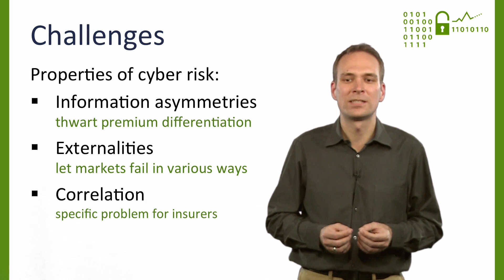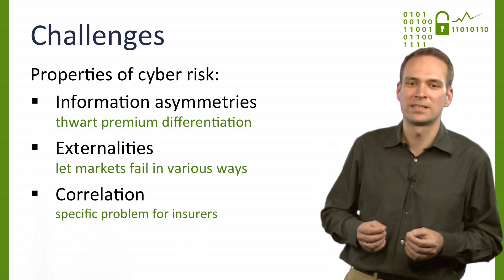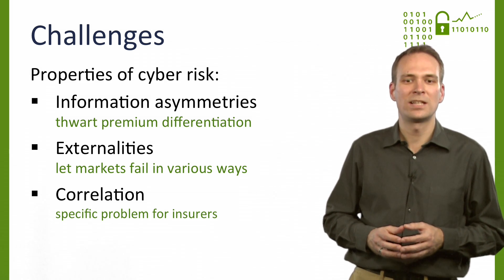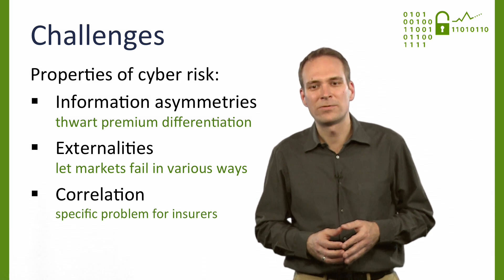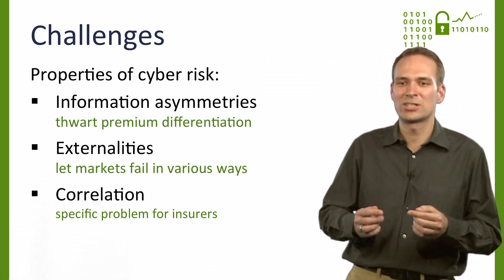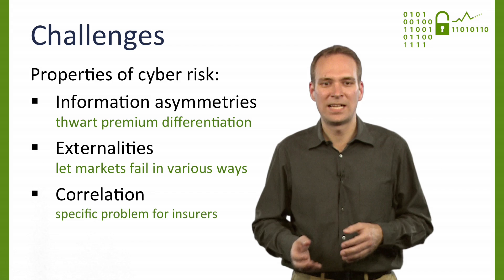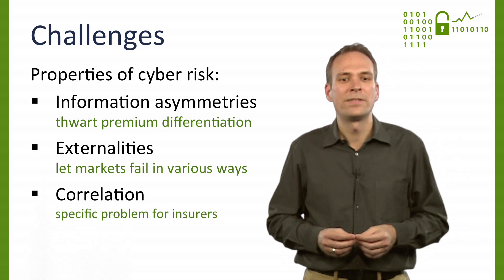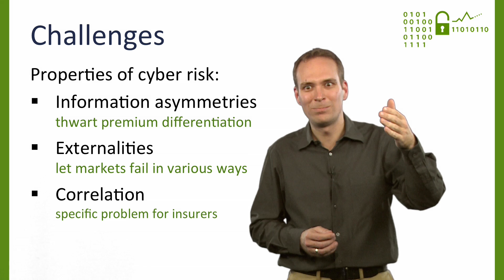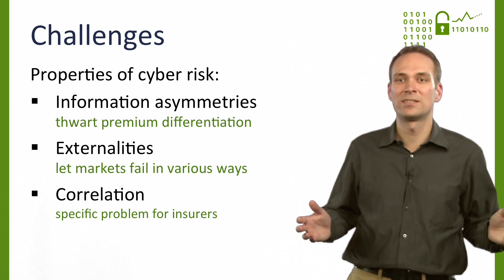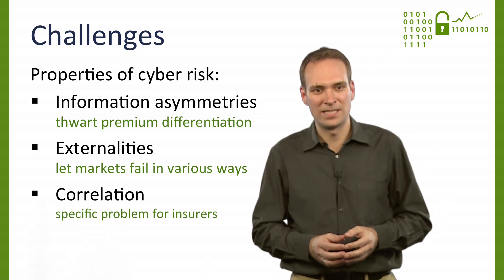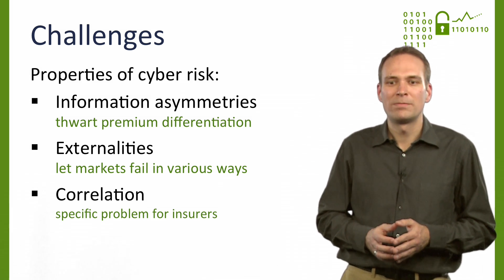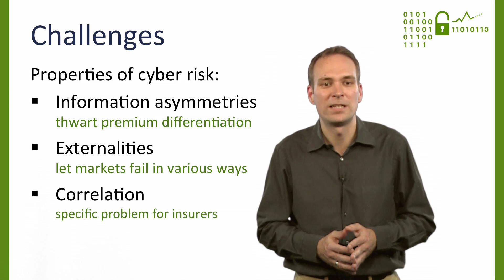What makes cyber insurance difficult to handle at large are three distinctive features of cyber risk: information asymmetries, externalities, and correlated risk. Information asymmetries impair insurance markets if insurers cannot observe the actual security level of their insured. This means they are unable to separate good risks from bad risks, with the effect that risk-based premium differentiation cannot be enforced. Fixed premiums are either too high for good risks so that they do not join the pool, or too low for bad risks, in which case the insurer is likely to go bankrupt. Externalities cause market failures in many parts of the cybersecurity ecosystem.